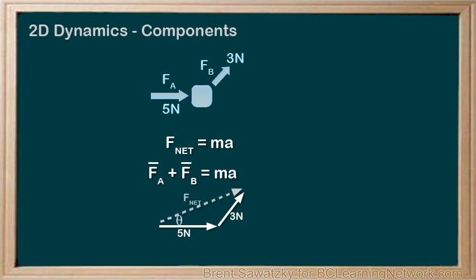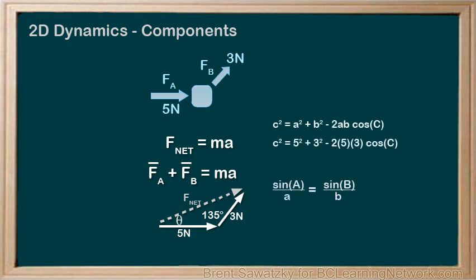Taking a look at our vector diagram, we could determine that our angle here is 90 degrees plus 45 degrees or 135 degrees. It's not a right triangle, so we pull out our cosine law and sine law. The cosine law can be used to determine the magnitude of the resultant or F net.